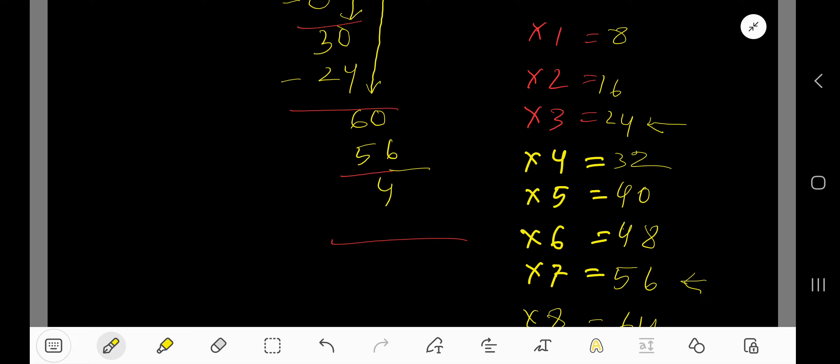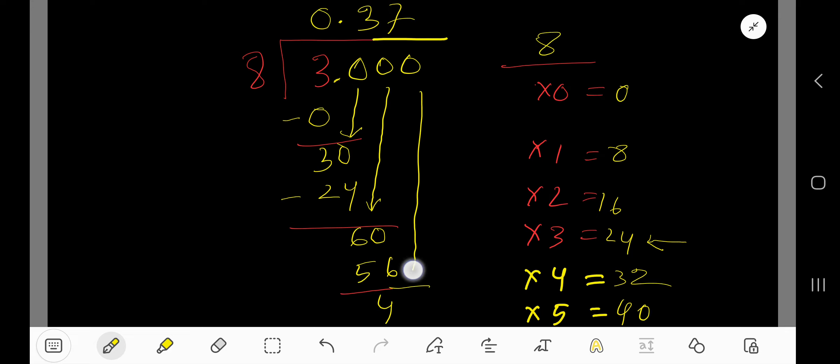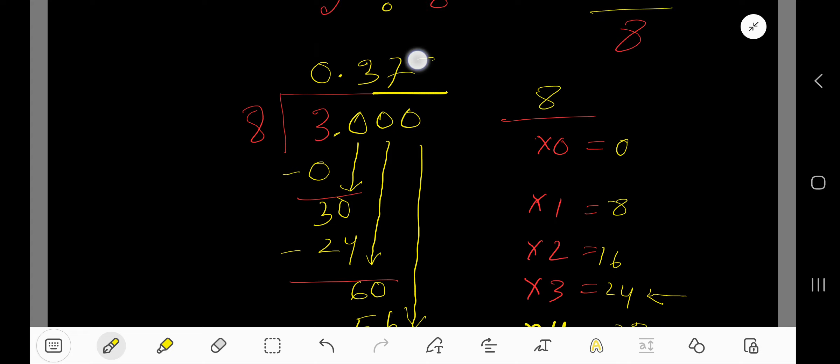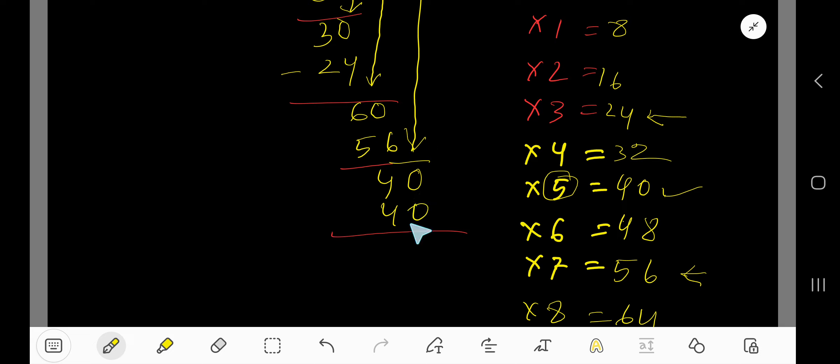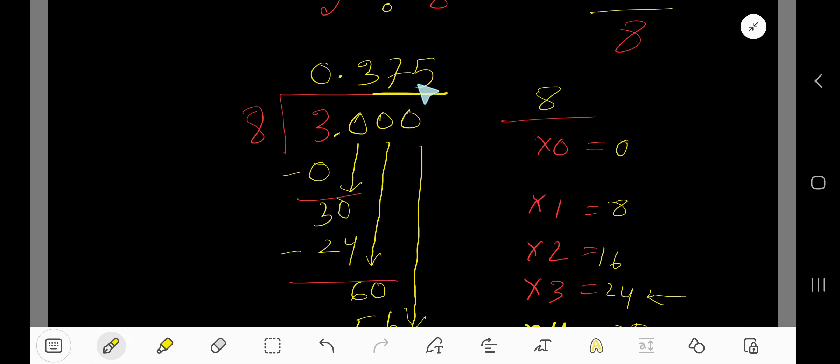Bring down the next 0. 8 goes into 40 how many times? 5 times. 5 times 8 is 40. If you subtract, the remainder is 0. The quotient is 0.375, and this is the answer. So 3 divided by 8 as a decimal is 0.375.